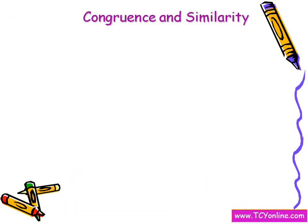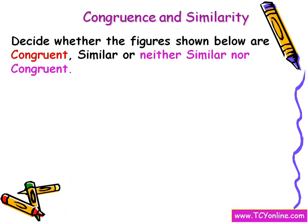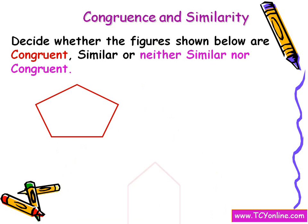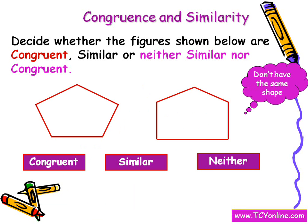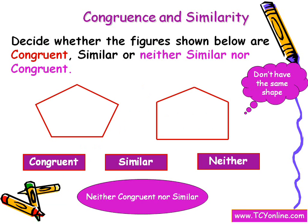Now let's see a question on congruence and similarity. Here we have to decide whether the following figures are congruent, similar, or neither similar nor congruent. We can see that they don't have the same shape but they have the same size. So these are neither congruent nor similar, because congruent figures have the same shape as well as the same size, while similar figures have the same shape but not the same size.